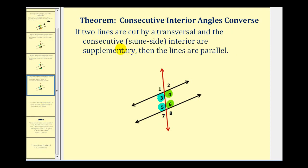The last theorem for this video is the consecutive interior angles converse. This tells us that if two lines are cut by a transversal and the consecutive or same side interior angles are supplementary, then the lines are parallel. So if angles three and five are supplementary, or angles four and six are supplementary, then the lines would be parallel. We're going to prove each of these theorems in the next several videos. I hope you found this helpful.